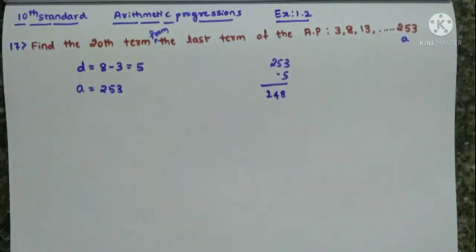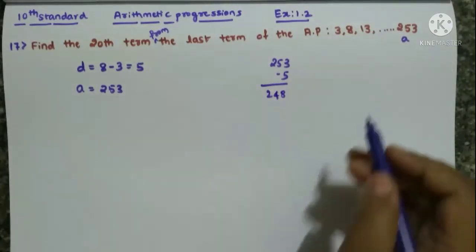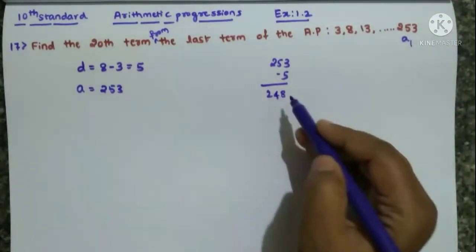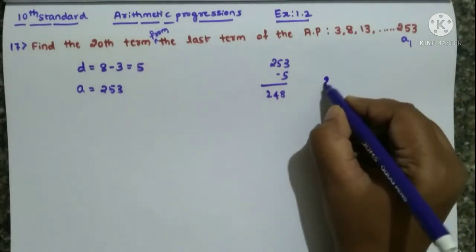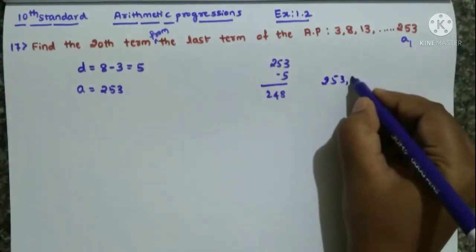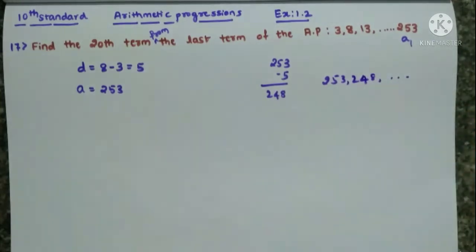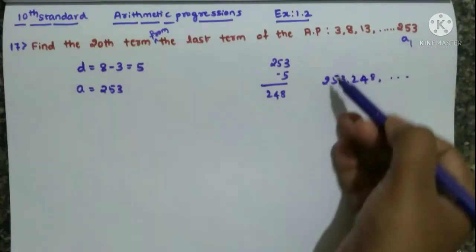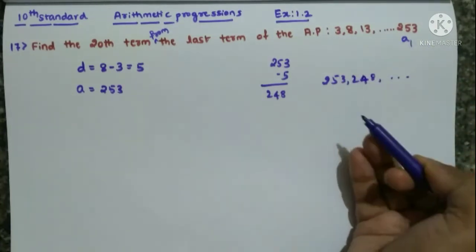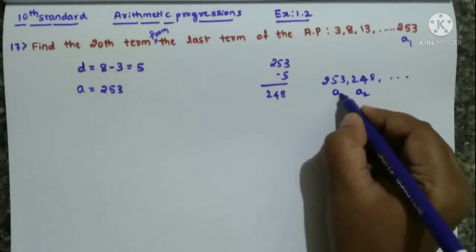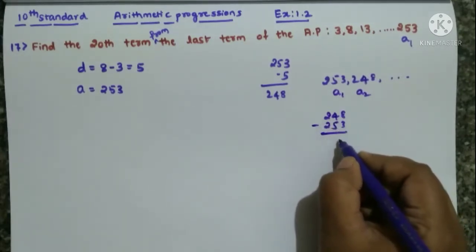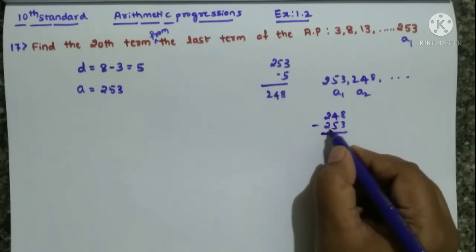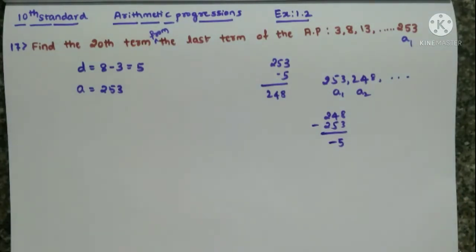Before this, which number will come? The difference is 5. If you subtract 253 minus 5, you have to subtract 5 from this, correct? Then only you will get the term before. This AP is increasing here. If you subtract 5 from 253, you will get 248. This is the term before 253. If you are considering 253 as A1, then 248 will be A2. From last, 253 is first, next term will be 248, it will go on decreasing. From last if you are considering 253, 248, it will come like this. So 248 minus 253 if you do, you will get 5. But bigger number is containing minus sign, so minus 5 will come.